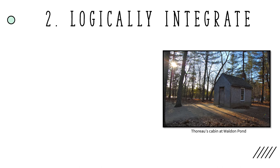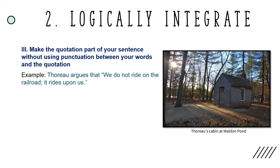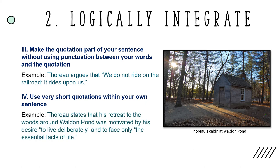The next option for logically integrating a quotation is to make the quotation a part of your sentence without using any punctuation between your words and the words that you're quoting. For example: "Thoreau argues that 'we do not ride on the railroad, it rides upon us.'" You can also use very short quotations within your own sentence. For example: "Thoreau states that his retreat to the woods around Walden Pond was motivated by his desire to 'live deliberately' and to 'face only the essential facts of life.'" Here, the writer uses a combination of paraphrasing and quoting, using quotation marks only around the material that is quoted word for word.